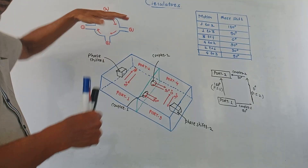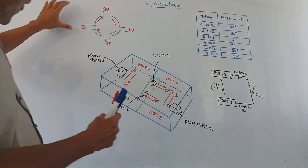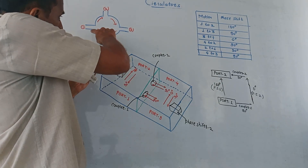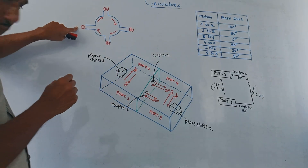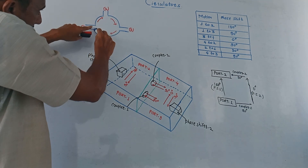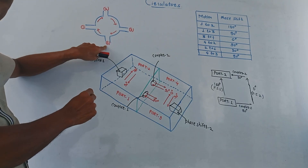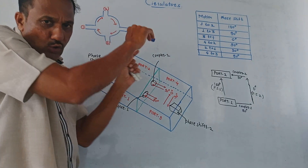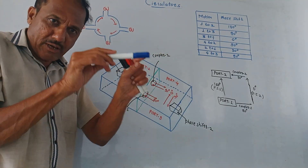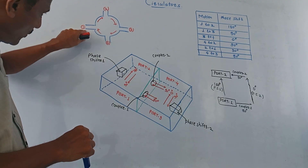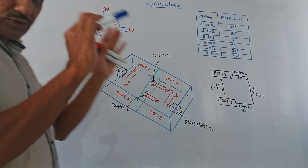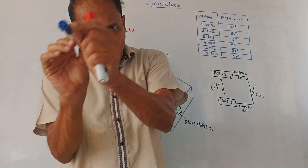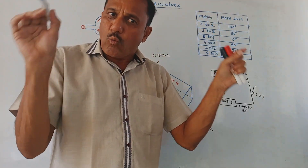This is the basic symbol of the circulator. We are considering a four-port circulator, so there are four ports: port 1, 2, 3, and 4. The ports are connected in clockwise direction. When we apply a wave at port 1, it will be given to port 2 but not to port 4. The wave from port 2 will be given to port 3. The wave circulates in a clockwise direction from one port to the next connected port.